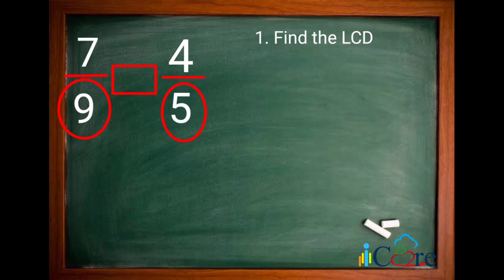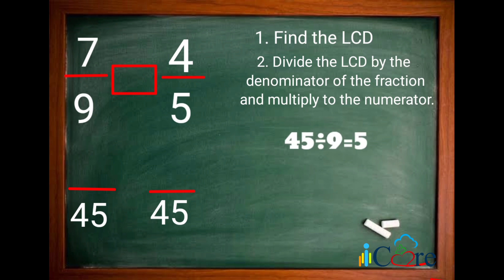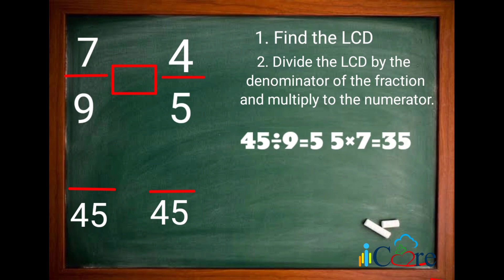The answer is 45. The second step is to divide the LCD by the denominator and then multiply the answer to the numerator. Let's start with 7 over 9. LCD 45 divided by the denominator 9 is 5. 5 times the numerator 7 is equal to 35.